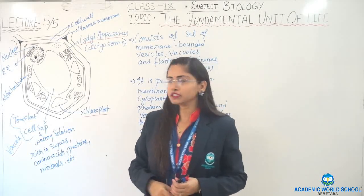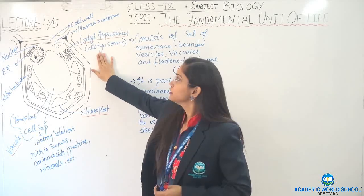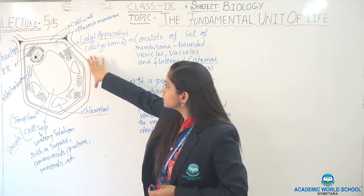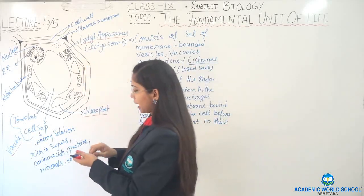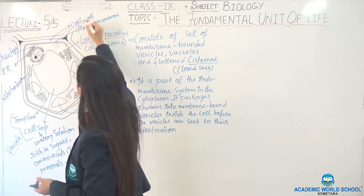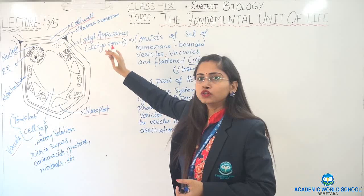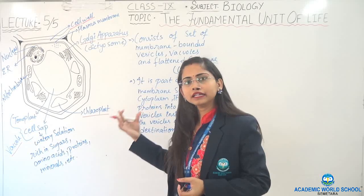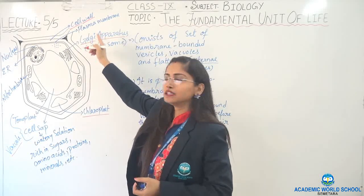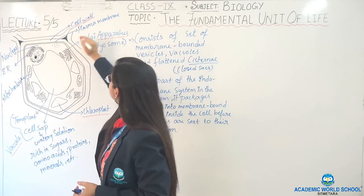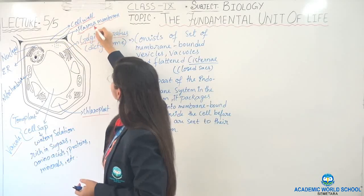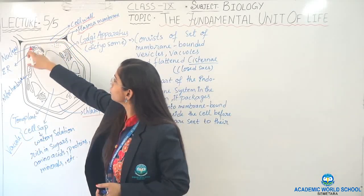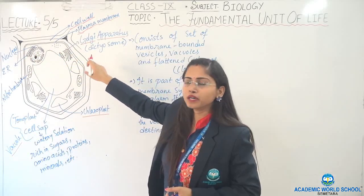Starting with the first one for today: the Golgi apparatus. This cell I have drawn here is a plant cell, which will be having the cell wall — only the plant cell has the cell wall. There will be certain points which are different in plant and animal cells. Cell wall is only present in the plant cell, and plasma membrane is present in both. In the animal cell, the cell wall is absent; only the outer membrane is the plasma membrane, which is a selectively permeable membrane.